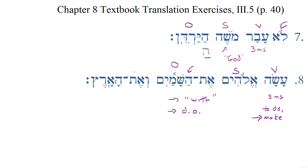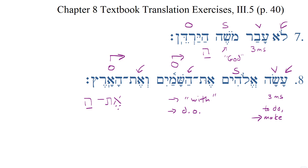Here we have a second direct object going back to the same verb. So we have the one verb, asa, and then two direct objects that relate back to it. We have a second direct object marker, v'et, relating back to the same verb, followed by ha-aretz — the earth. So God made the heavens and the earth. Note that normally when we have the et direct object marker, it goes with a definite noun — either a definite article or a proper name. The noun itself will be definite. So: Asa Elohim et ha-shamayim v'et ha-aretz — God made the heavens and the earth.